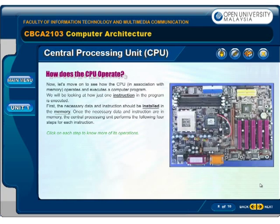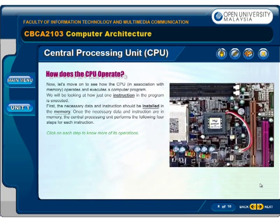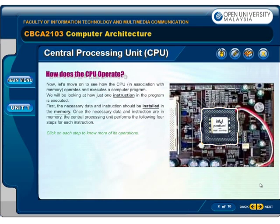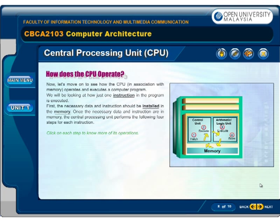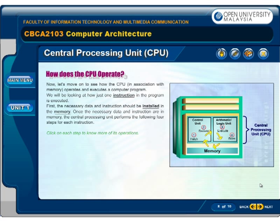Now let's move on to see how the CPU, in association with memory, operates and executes a computer program. We will be looking at how just one instruction in the program is executed. First, the necessary data and instructions should be installed in the memory. Once the necessary data and instructions are in memory, the central processing unit performs the following four steps for each instruction.